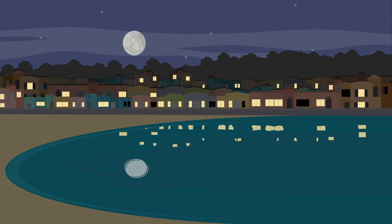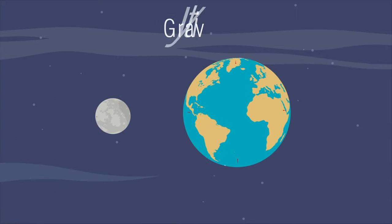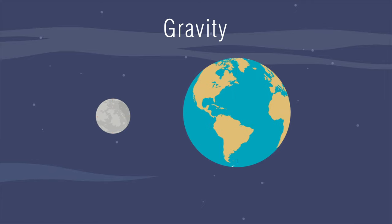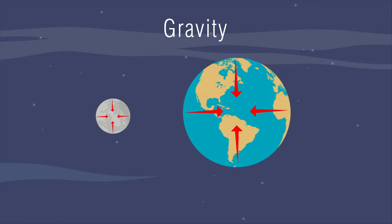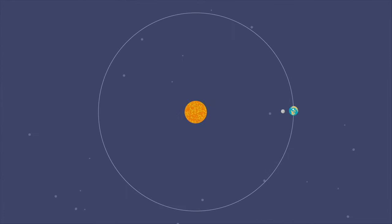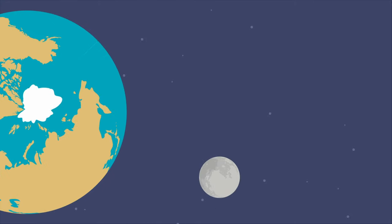The moon. That's right, the moon is the main cause of tides in Earth's oceans. The moon and Earth both have gravity — the force by which a planet or other body draws objects toward its center. The force of gravity keeps all of the planets in orbit around the sun, and Earth's gravity keeps the moon in orbit around Earth.